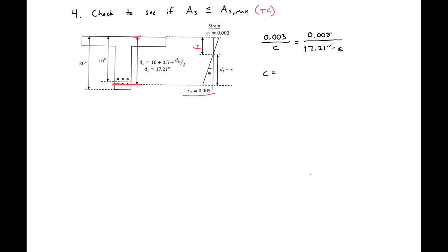So we can solve for C here. And we'll get C equal to 3/8 times 17.21 inches. So we'll get C equal to 6.43 inches. We can use our C then to find our A. So we'll see our A is equal to beta 1 times C. Our beta 1 here we found to be 0.85 for 4 KSI concrete times 6.43 inches will give us an A of 5.46 inches.